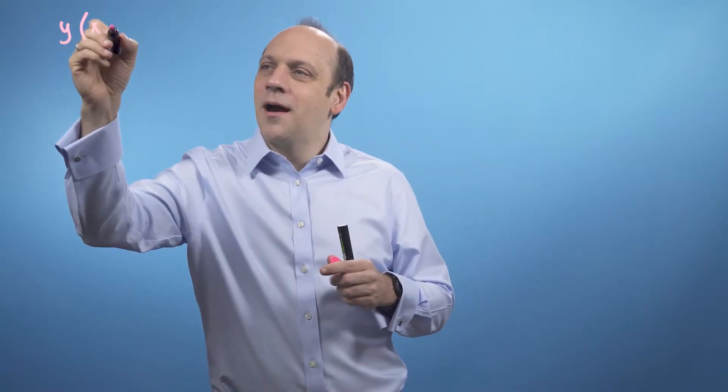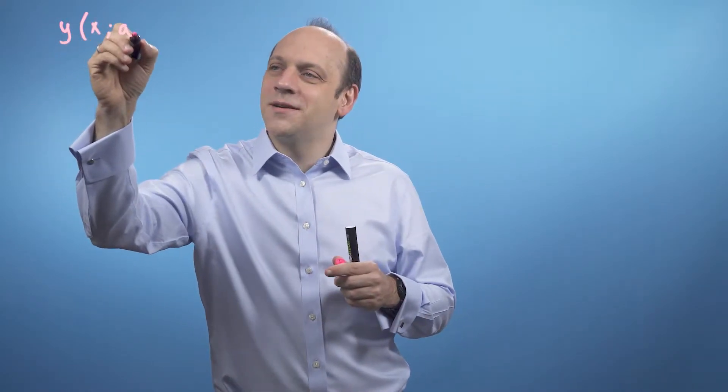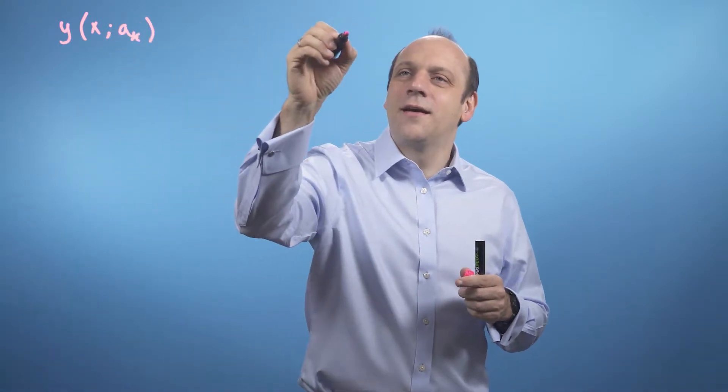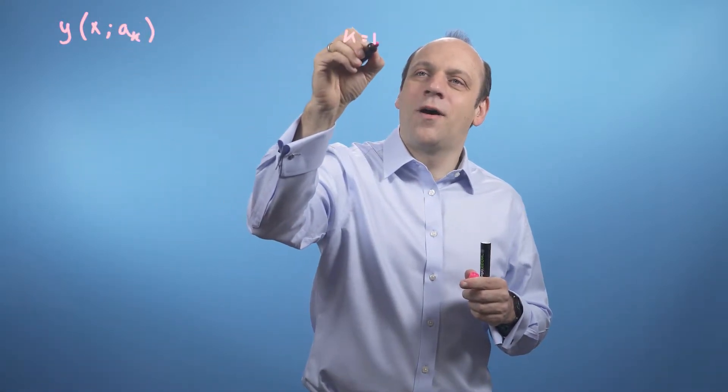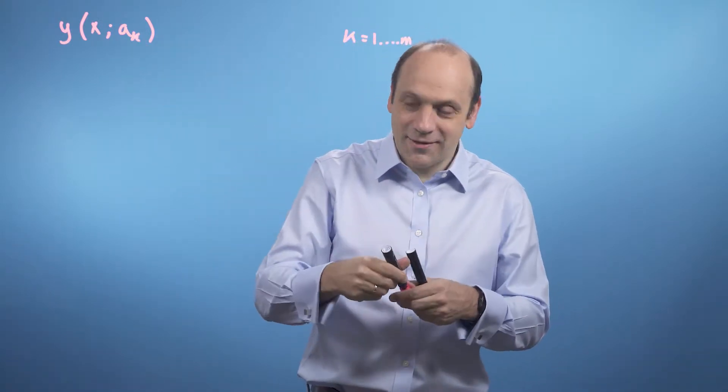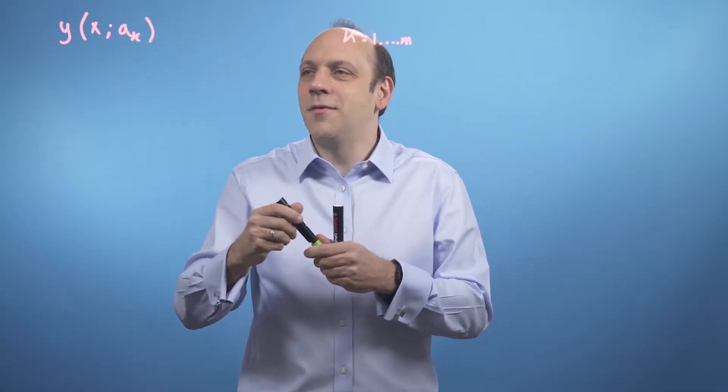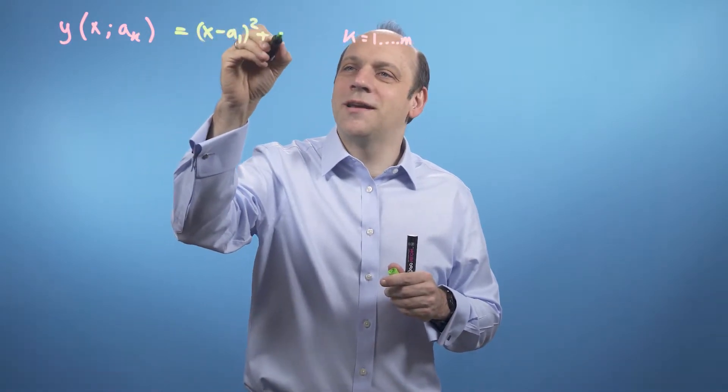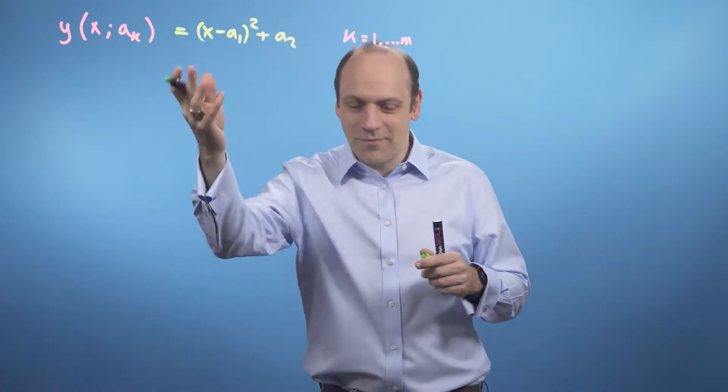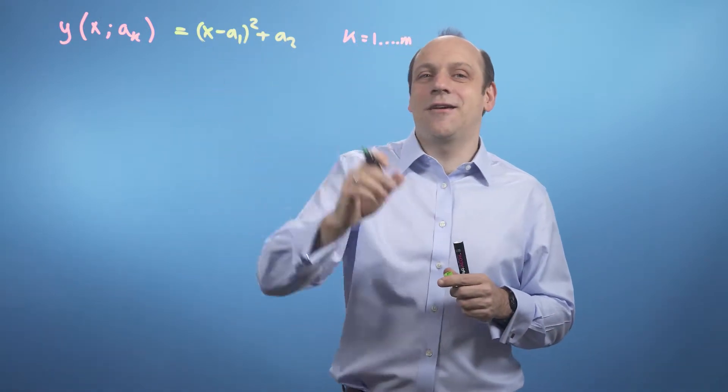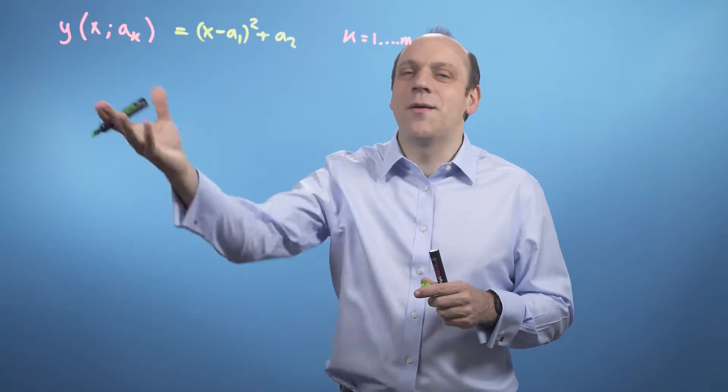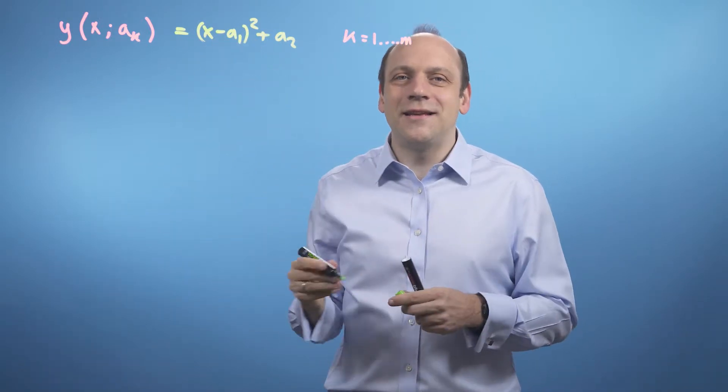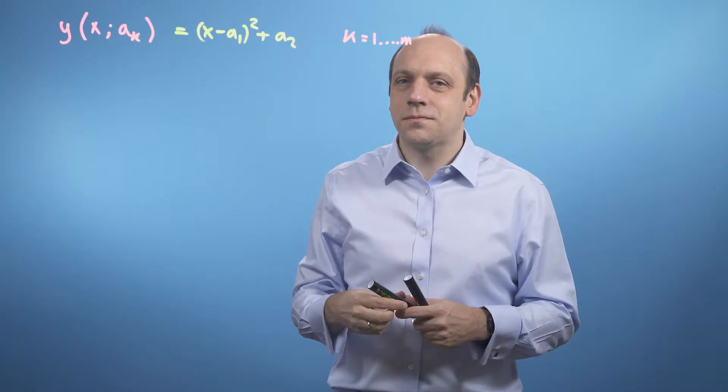So let's say we have a function y of some variable x, and that function has parameters in it, a_k, where k goes from 1 all the way up to m. So there's m of these a's. For example, we could have x minus a1 squared plus a2. That would be an example of some function y. This function isn't linear in a1. If I double a1, I don't double the function. So it's a nonlinear least squares we're going to do.